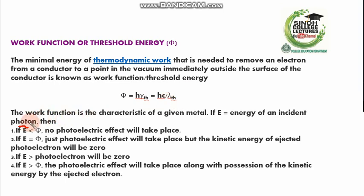Here is the energy of the photon. If the incident energy is less than the threshold energy, the electron will not emit out. If it is equal to the threshold energy, the electron emits out but there is no kinetic energy and no photocurrent produced. If the incident energy is greater than the threshold energy required by the photoelectrons, there will be emission of electrons as well as photocurrent, because the remaining energy is converted into kinetic energy.